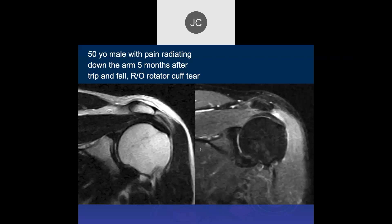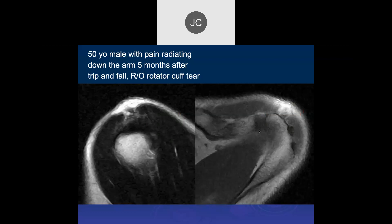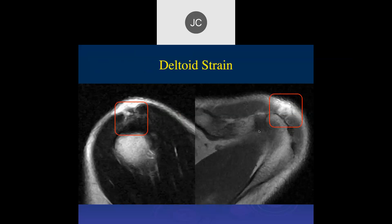A 50-year-old male with pain radiating down the arm for five months after a trip and fall, rule out rotator cuff tear. The supraspinatus looks pretty good, but there is some adjacent high signal on PD fat sat imaging — probably the subacromial subdeltoid bursa. On sagittal images, the edema is in the deltoid — so that's a deltoid strain. The deltoid is not abnormal except for fat replacement in a lot of people, but it is important to always look at it because when you see pathology in it you don't want to miss it.